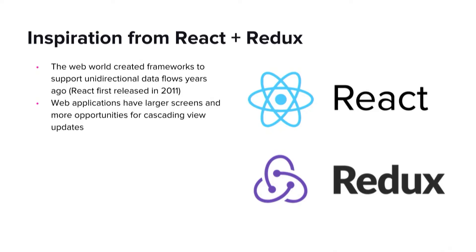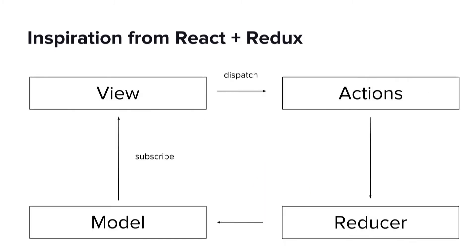Web developers actually built frameworks to enforce unidirectional data flows many years ago with React and Redux. React is a framework that allows developers to declaratively program their user interfaces. Redux is a web development framework that manages the application state. Web developers solved this problem earlier than mobile developers because historically, web applications have run on larger screens on desktop machines, and larger screens means more view components and more opportunities for cascading UI updates.